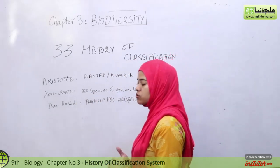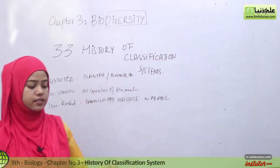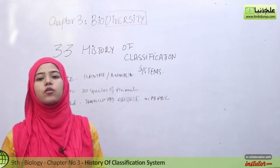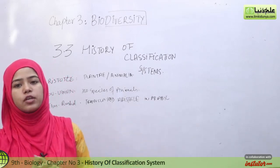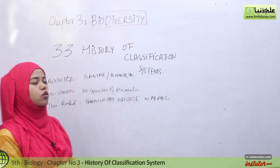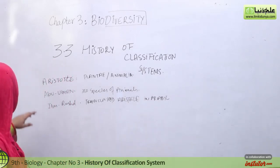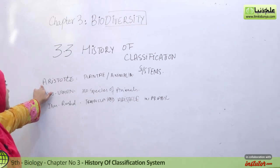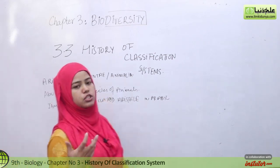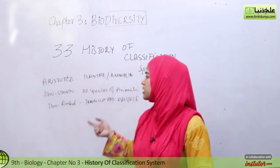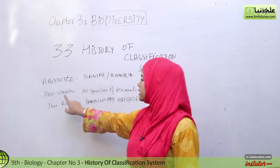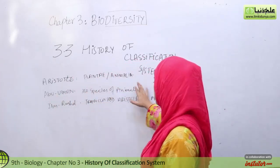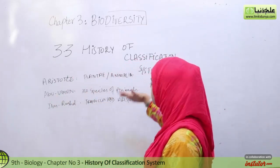In the history of classification, it basically has 3 followers, 3 learners and 3 starters, and there is also a column in your book. Aristotle divided organisms into two groups: plants and animalia. Then Abu Usman al-Jahiz described 350 species of animals and added them in his book.